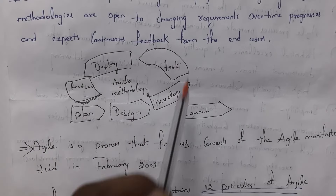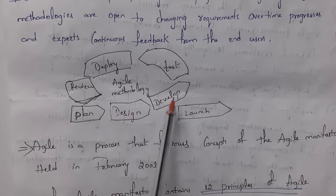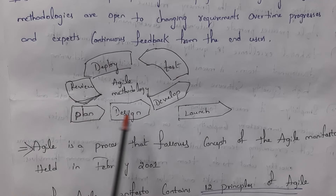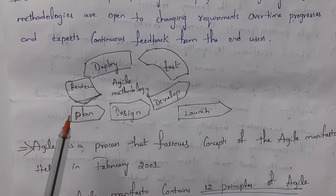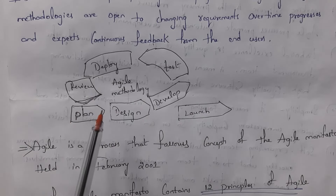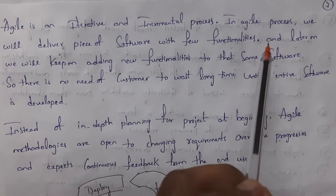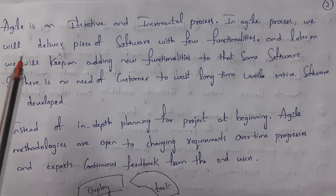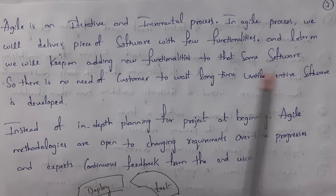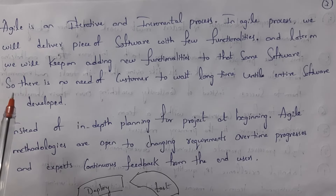The agile process runs like a loop. For each feature, the team goes through: plan, design, develop, test, deploy, review, and launch. Then for the next new feature, the same cycle repeats. In agile, we deliver a piece of software with a few functionalities and keep on adding new functionalities. So there is no need for the customer to wait a long time until the entire software is developed. Agile follows the concept of the Agile Manifesto, established in February 2001 — a document containing 12 principles that software companies must follow to develop high quality software.